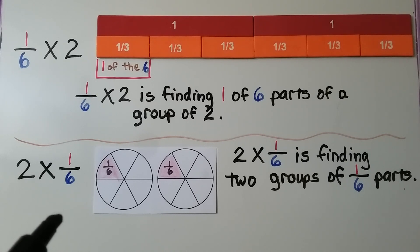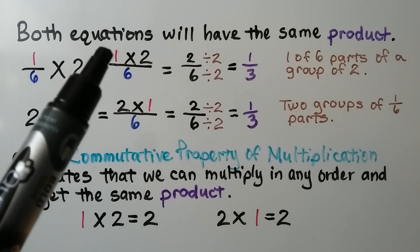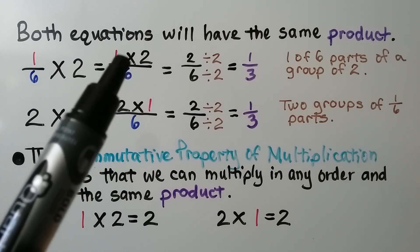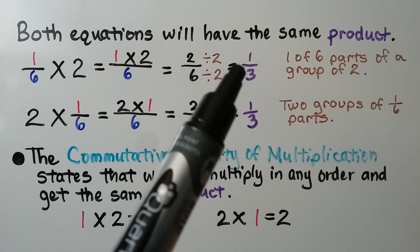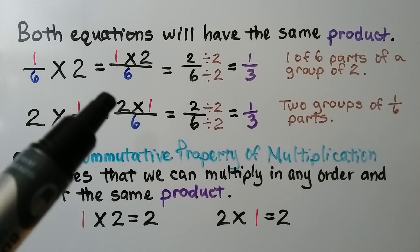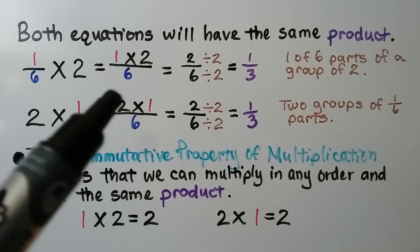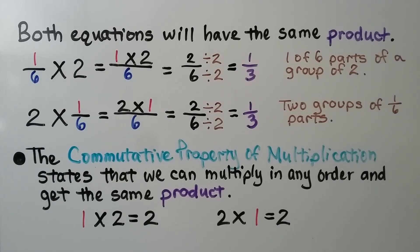2 times 1 sixth is finding 2 groups of 1 sixth parts. Both equations will have the same product. For 1 sixth times 2, we write the numerator 1 times the whole number 2, we get 2, written over the denominator — we have 2 sixths. In simplest form it's equal to 1 third. For 2 times 1 sixth, we use the whole number 2 times the 1 numerator and use the given denominator. We still get 2 sixths, which is equal to 1 third.